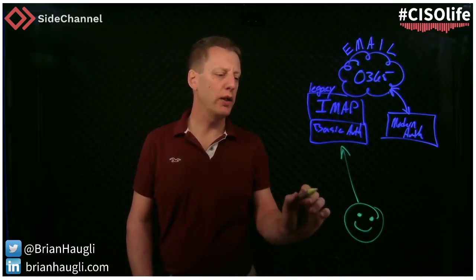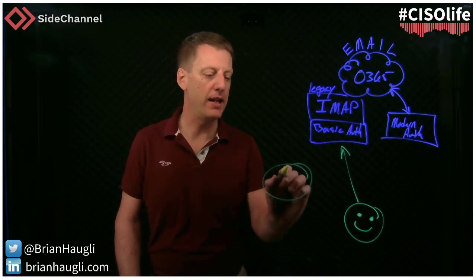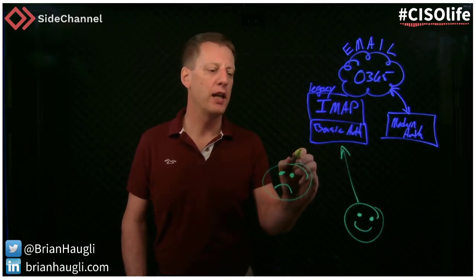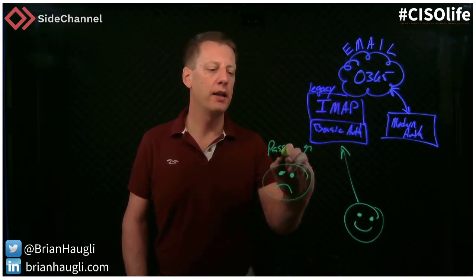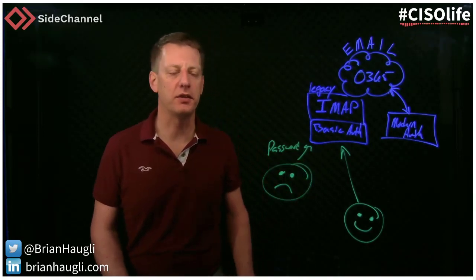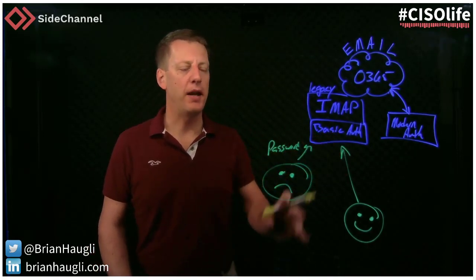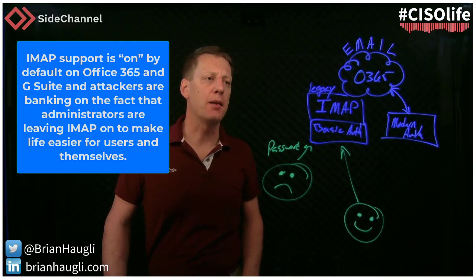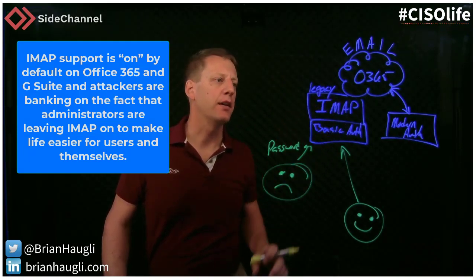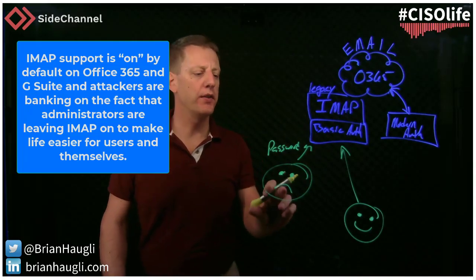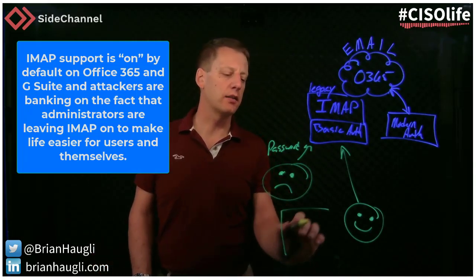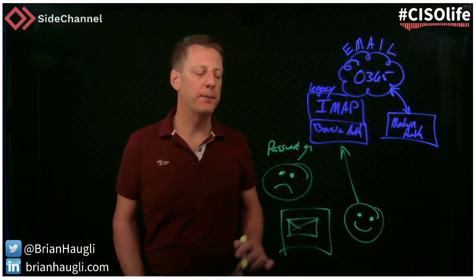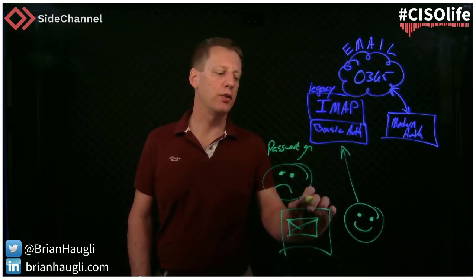How does this usually play out? Traditionally, a bad actor will eventually figure out that IMAP is exposed and start doing some type of password spraying attack. This was actually pretty big against Office 365 back in 2018–2019 — password spraying attacks happening quite a bit against the IMAP protocol for Office 365 tenants. This allows a legacy-style client to access email using IMAP, authenticating with a basic username and password.